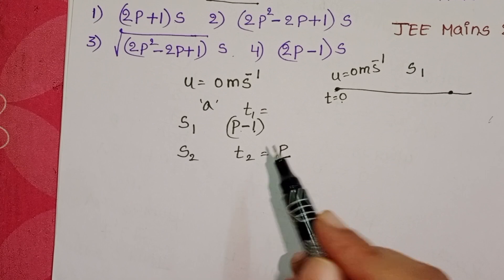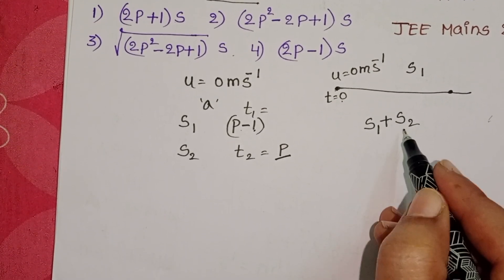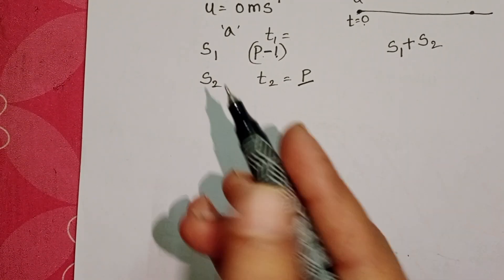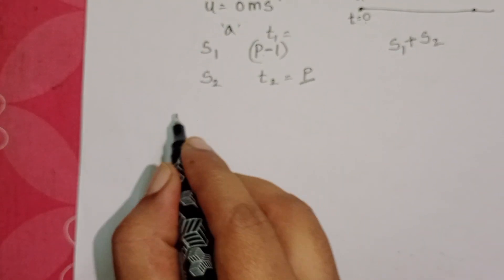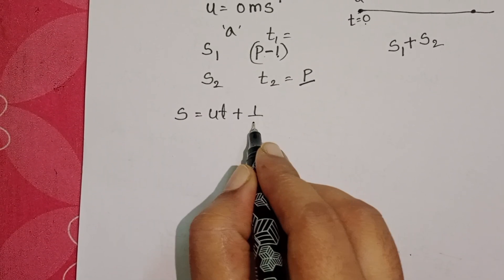By using this information, we have to find out the time taken to cover S1 plus S2 distance. Here, the object possesses uniform acceleration, so take equations of motion: S equals UT plus half A T square.